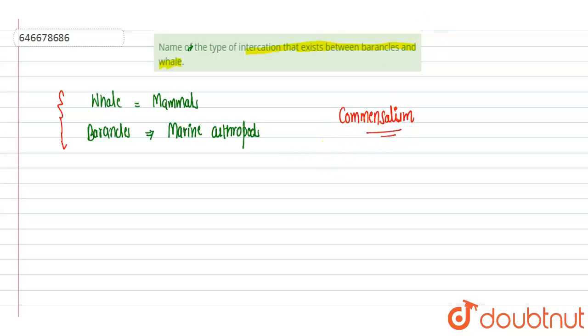...in which one organism is benefited and the other organism is neither benefited nor harmed. The interaction is between two organisms, and the second one is neither benefited nor harmed. That is commensalism.